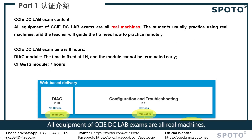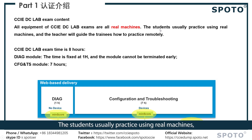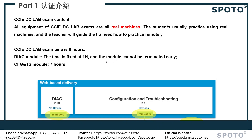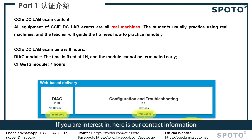All equipment for the CCIE DC lab exam uses real machines. Students usually practice using real machines and the teacher will guide you on how to practice remotely. The diagnostic section is one hour and the module cannot be terminated earlier. Configuration and troubleshooting total time is seven hours.